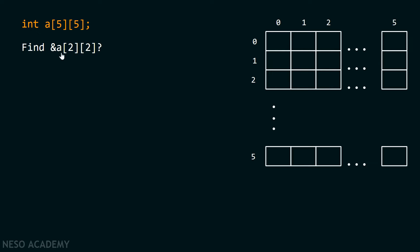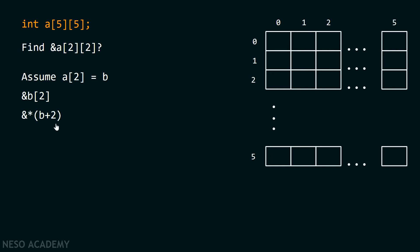How do I find this address? I am assuming that A[2] is equal to b. So I can write ampersand A[2][2] as ampersand b[2]. And I know that b[2] can be written as *(b + 2). Finally, I can replace b by A[2], and A[2] can be written as *(A + 2). So finally, ampersand of A[2][2] is equal to ampersand *(*(A + 2) + 2).